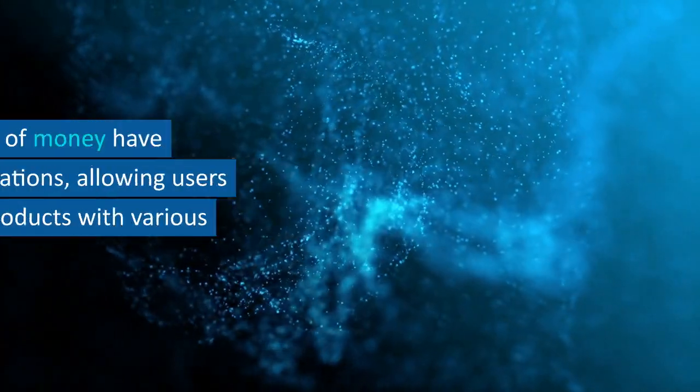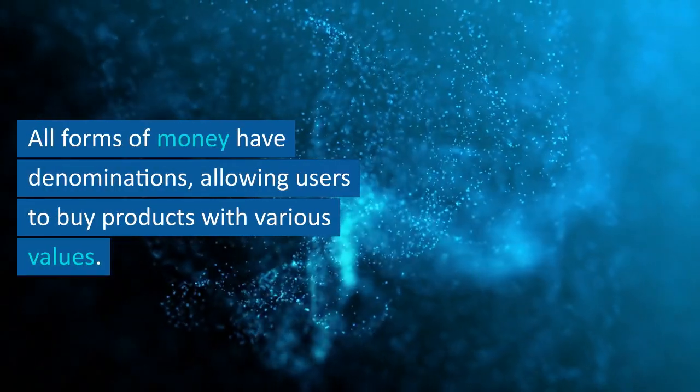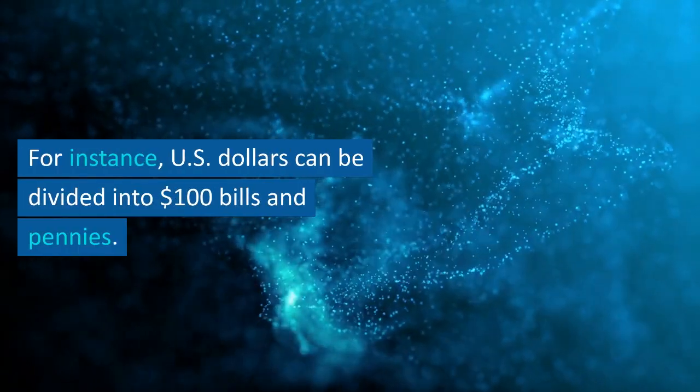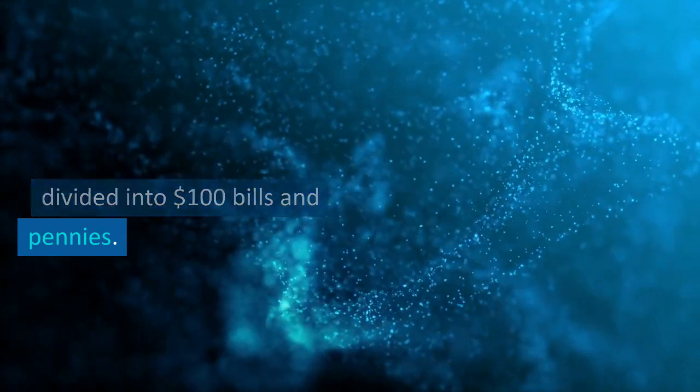Divisibility. All forms of money have denominations, allowing users to buy products with various values. For instance, US dollars can be divided into $100 bills and pennies.